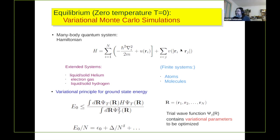The interaction potential can be chosen phenomenologically — for example, a Lennard-Jones potential to represent liquid helium, which is a test case I'll show some examples of. Or more fundamentally, the Coulomb interaction, as in the electron gas or in liquid and solid hydrogen.